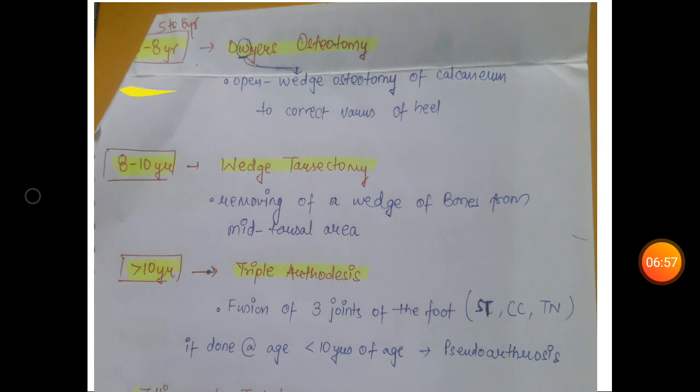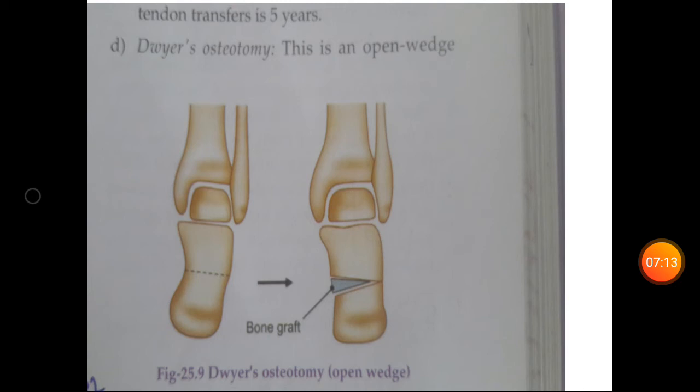In between five to eight years of age, Droid's osteotomy is performed: open wedge osteotomy of calcaneum to correct varus of heel, in which a wedge-shaped bone is removed and a bony graft is applied. Some prefer a closed wedge osteotomy on the lateral side.